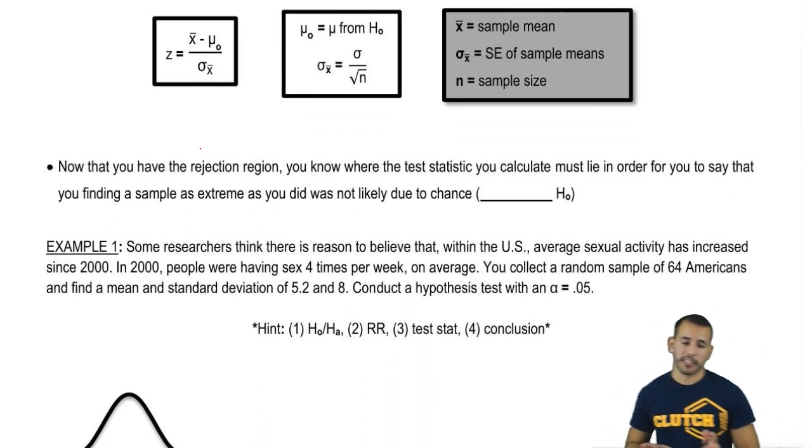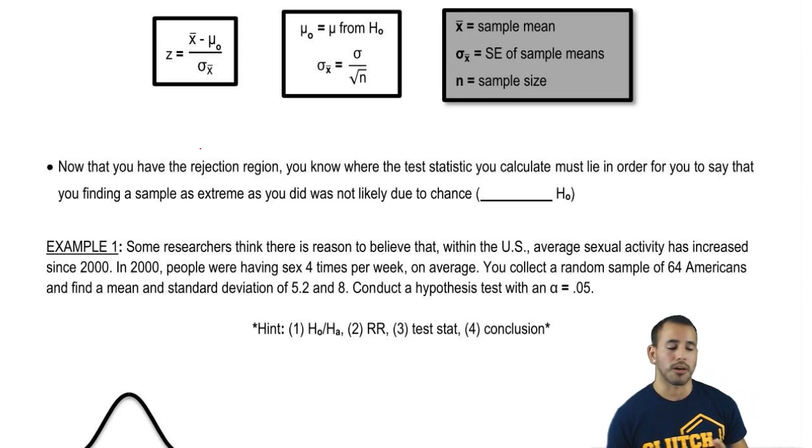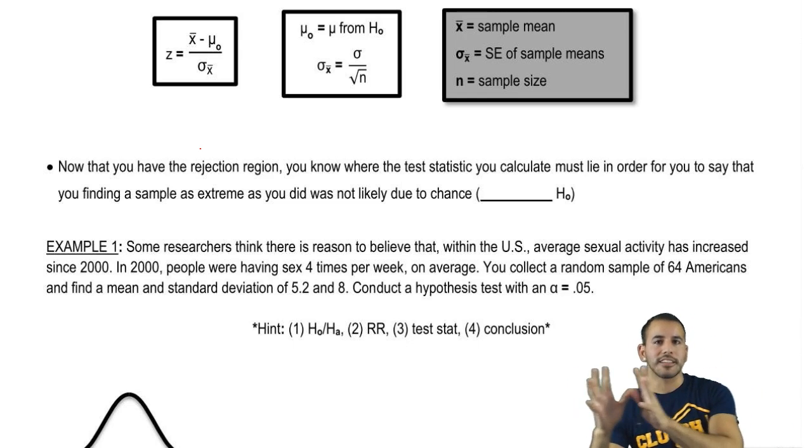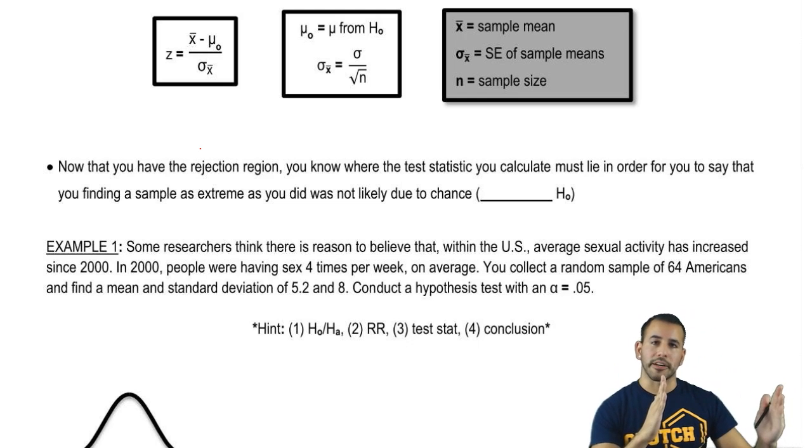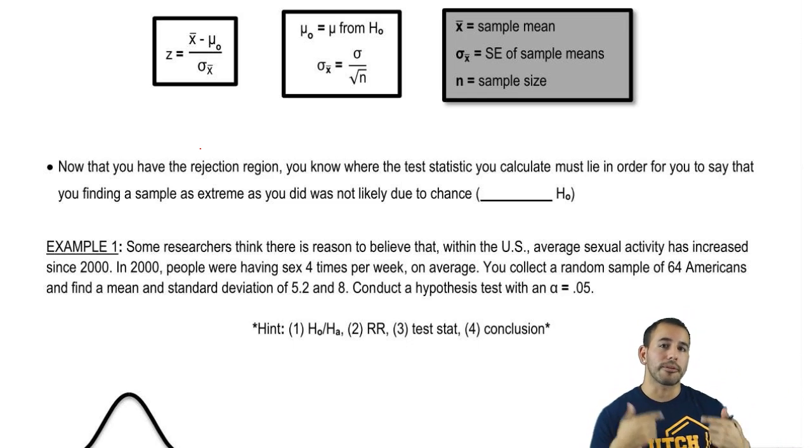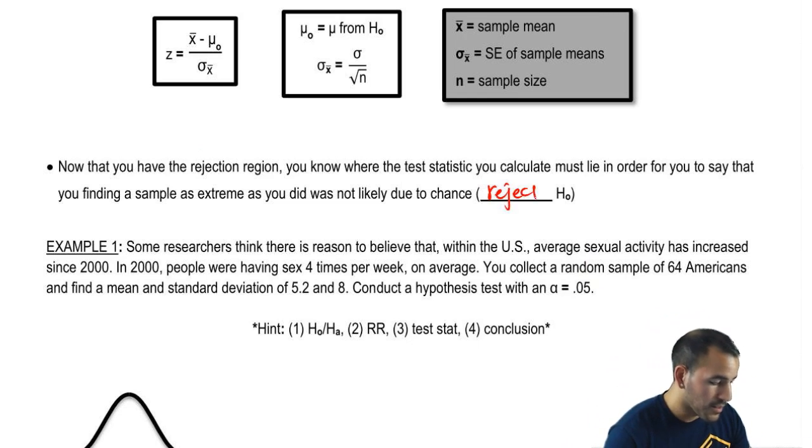So again we've already figured out how to do the rejection region. So now we need to see where our test statistic lies in relation to that. That test statistic is the part, only really part that varies across different types of problems. That rejection region is where that test statistic must lie in order for you to say that you found a sample as extreme as you did was not likely due to chance. This is where we would reject H0.